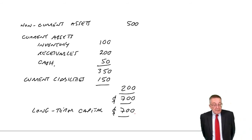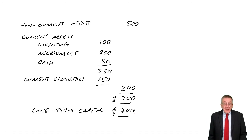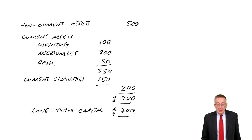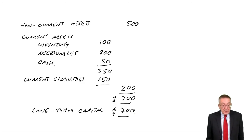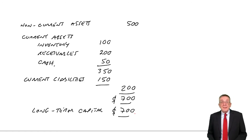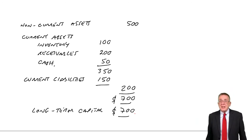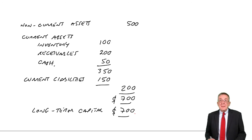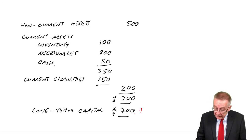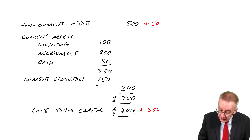Look at the bit at the bottom of the illustration. The company intends to double in size over the next year — they intend to grow the company. And in order to do that, they're going to raise 500 for long-term capital and invest it all in non-current assets. Buying another 500 of long-term capital and investing it in non-current assets. No problem.